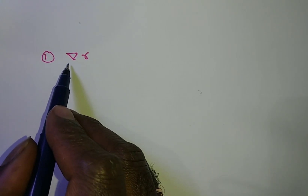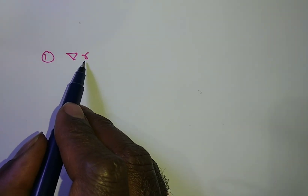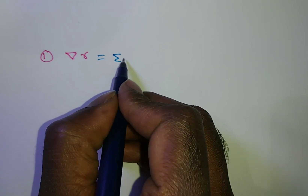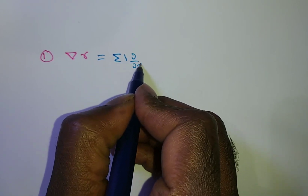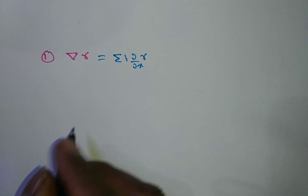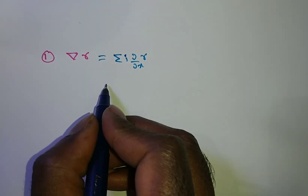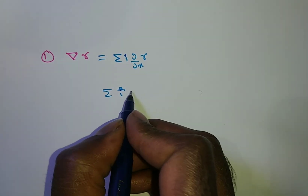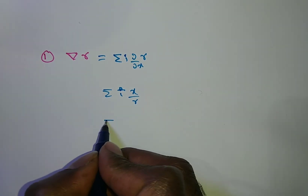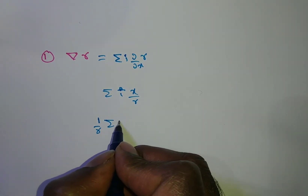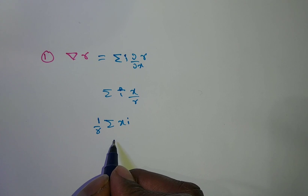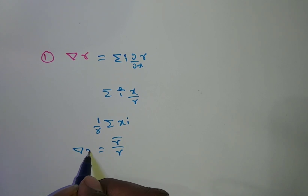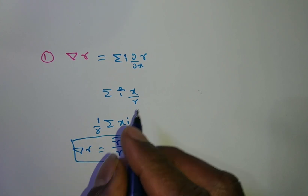Del r: del is a vector differential operator and r is a scalar potential function. Del r = Σi · (∂r/∂x). This equals Σi · (x/r). Taking 1/r outside, we have (1/r)·Σxi. What is Σxi? It is r̄. So del r = r̄/r.